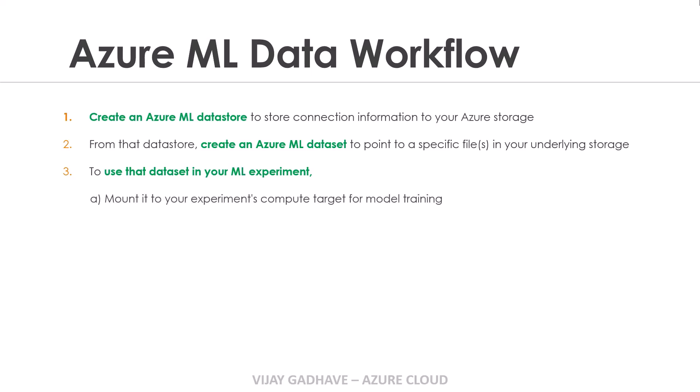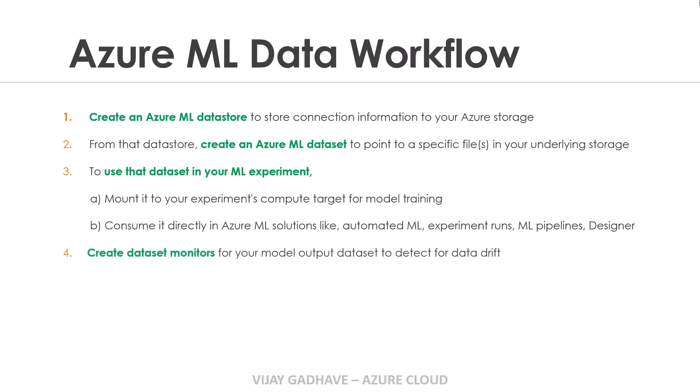We can mount this data set in our machine learning experiment's compute target for model training, or we can directly consume this data set in Azure Machine Learning solutions like Automated Machine Learning, Experiment Runs, Machine Learning Pipelines, or Azure Machine Learning Designer. After model training, we can create data set monitors for our output data set and it will detect the data drift. If data drift is detected, we have to update our input data set and retrain the machine learning model accordingly. This is the Azure Machine Learning data workflow — let us understand this workflow with the help of a diagram.